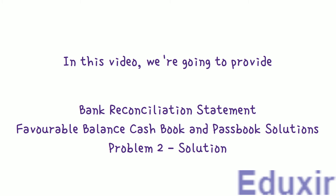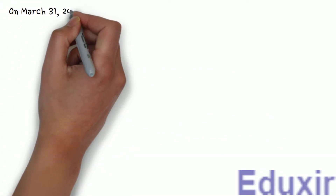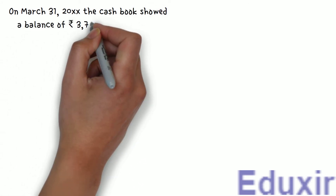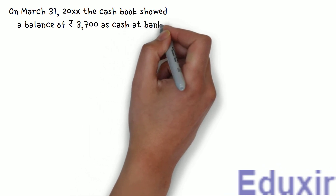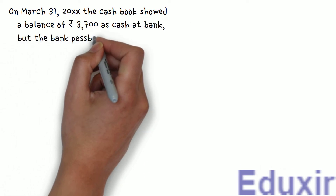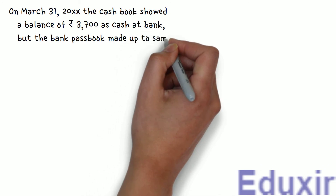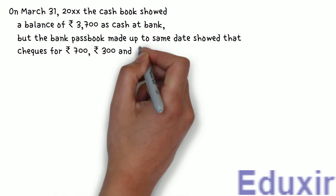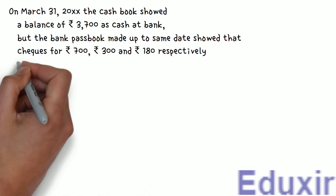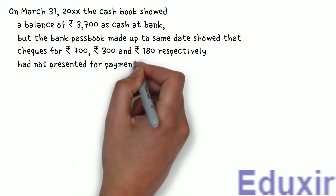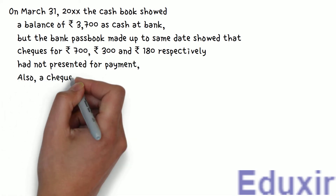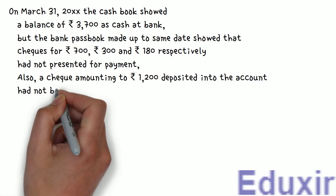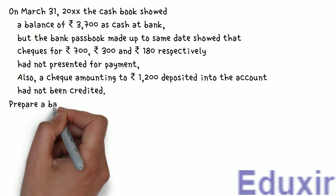The problem statement is as follows: On March 31st 2000+, the cashbook showed a balance of 3700 rupees as cash at bank. But the bank passbook made up to the same date showed that checks for 700 rupees, 300 rupees, and 180 rupees respectively had not been presented for payment. Also, a check amounting to 1200 rupees deposited into the account had not been credited. Prepare a bank reconciliation statement.